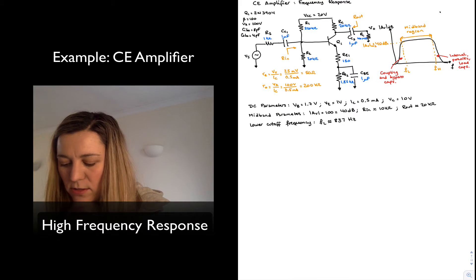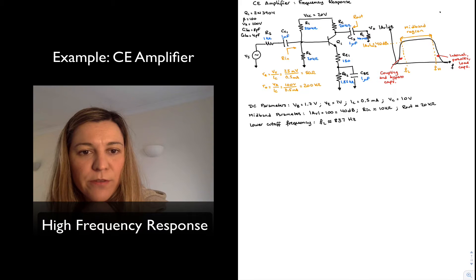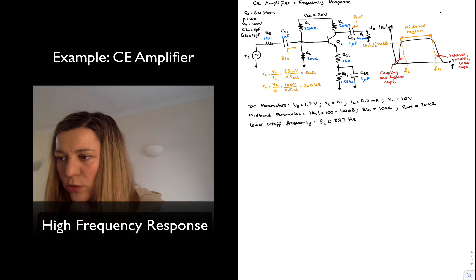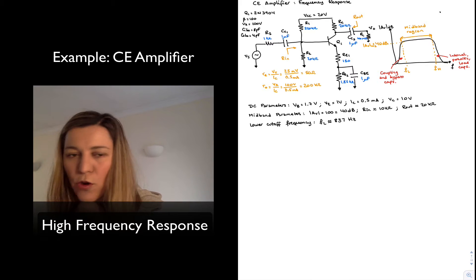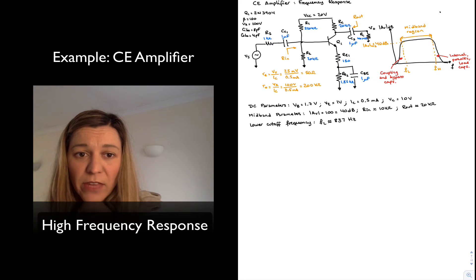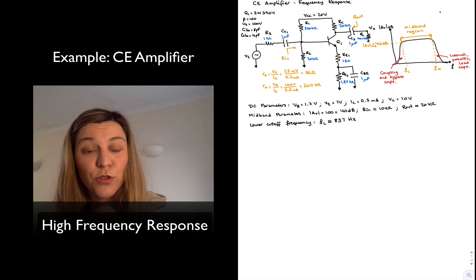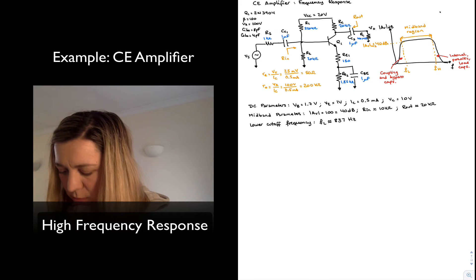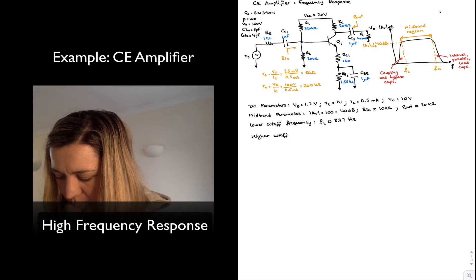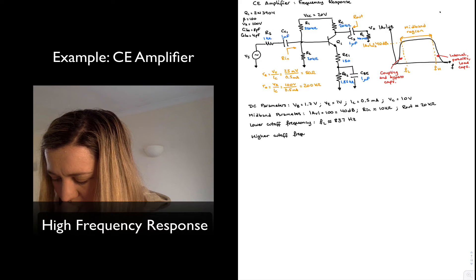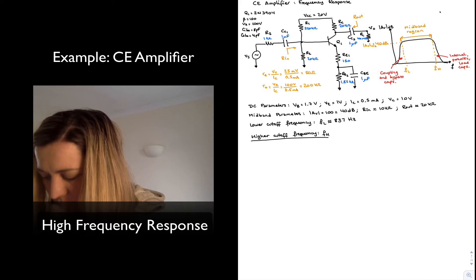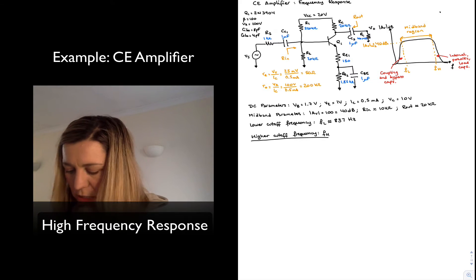Finally we are going to calculate the higher cutoff frequency for this common emitter amplifier, and that is FH. In order to do that I'm going to draw the high frequency equivalent circuit, just because it's going to allow us to see things more clearly. So let me go ahead — higher cutoff frequency FH — and I'm going to just redraw the circuit, the high frequency equivalent.